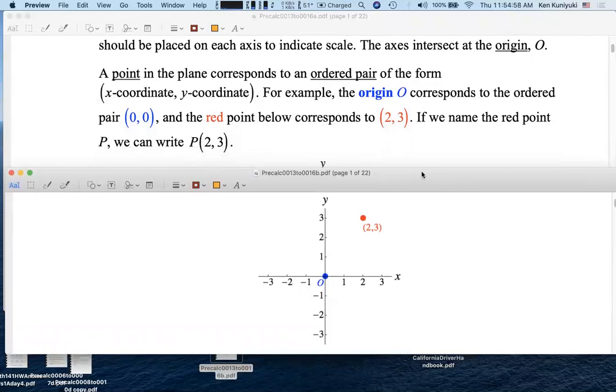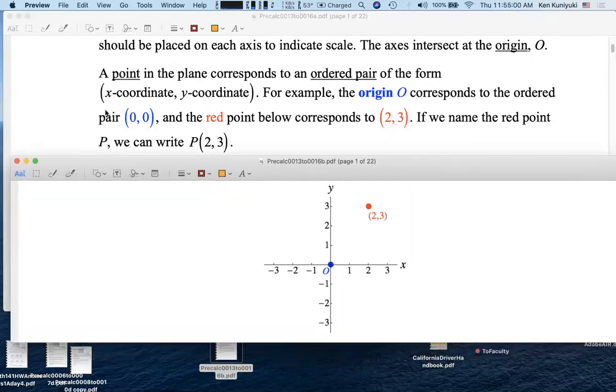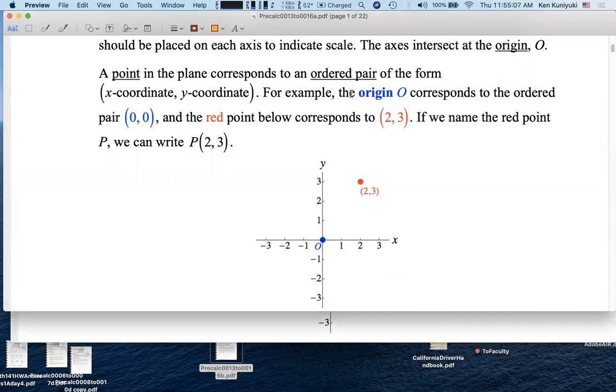Now each point in the plane has an x-coordinate and a y-coordinate. For example, the origin corresponds to the ordered pair (0, 0). The red point here corresponds to the point (2, 3), where the 2 is the x-coordinate and the 3 is the y-coordinate.